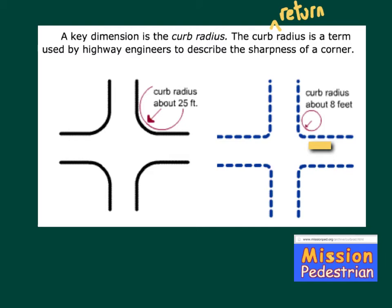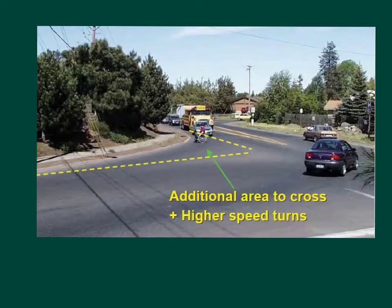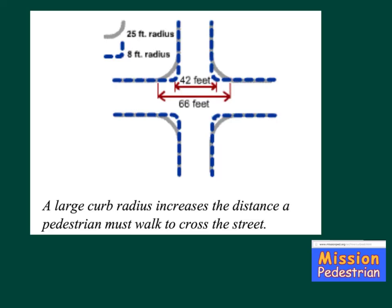A key dimension in intersection design is the curb radius, also known as the curb return radius. The curb return radius is a term used by highway engineers to describe the sharpness of a corner. A smaller curb radius is associated with a sharper corner that may not easily accommodate larger vehicles as they attempt this turn. A large curb radius accommodates larger vehicles and enables smaller vehicles to go around the corner faster. However, a large curb radius also increases the distance that a pedestrian must walk to cross the street, increasing pedestrian exposure to vehicle conflicts. Pedestrian safety can therefore be facilitated by smaller curb radii, which slow turning speeds for vehicles and give shorter crossing distances for pedestrians.